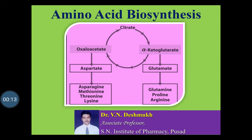today we will study amino acid biosynthesis. Amino acids are derived from the intermediates in glycolysis, citric acid cycle or pentose phosphate pathway. Ten of the amino acids have relatively a simple pathway compared to the other aromatic amino acids. Although many organisms can synthesize all 20 amino acids, mammals can synthesize only 10 amino acids.